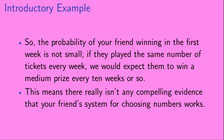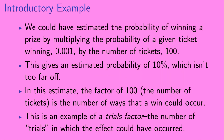The probability of your friend winning in the first week is not small. If they played the same number of tickets every week, we would expect them to win a medium prize every 10 weeks or so. This means there really isn't any compelling evidence that your friend's system for choosing numbers works. We could have estimated the probability of winning a prize by multiplying the probability of a given ticket winning — 0.001 — by the number of tickets, which was 100. This gives an estimated probability of 10 percent. In this estimate, the factor of 100, the number of tickets, is the number of ways that a win could occur.